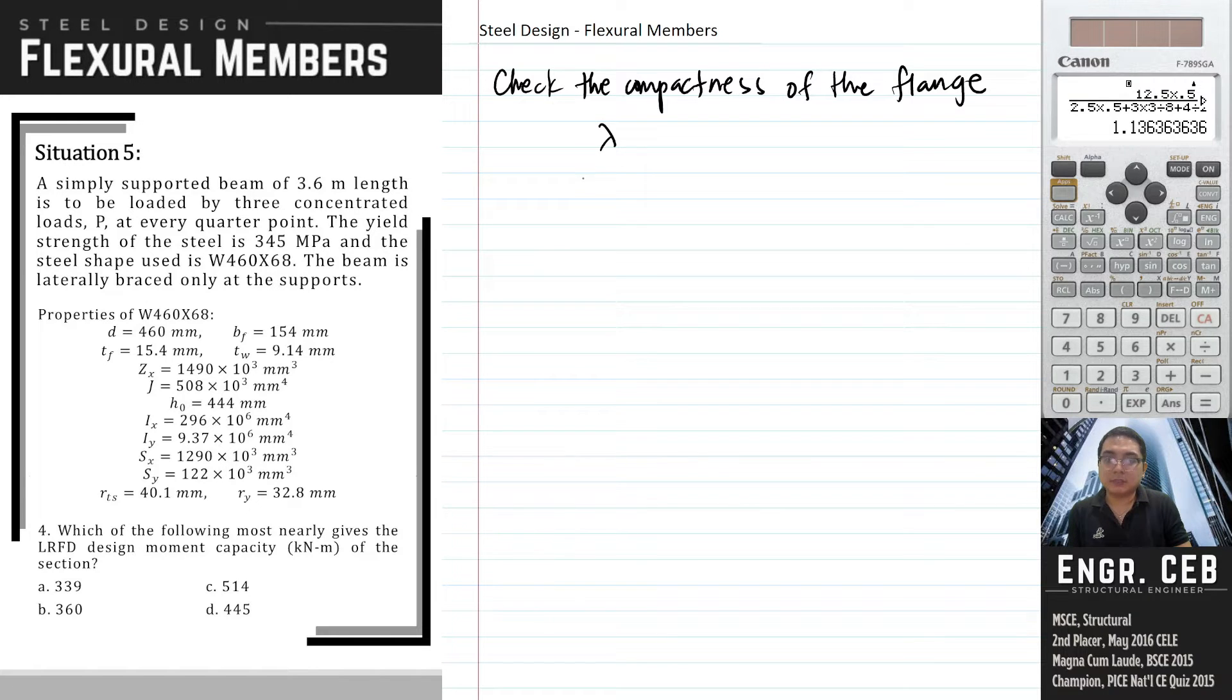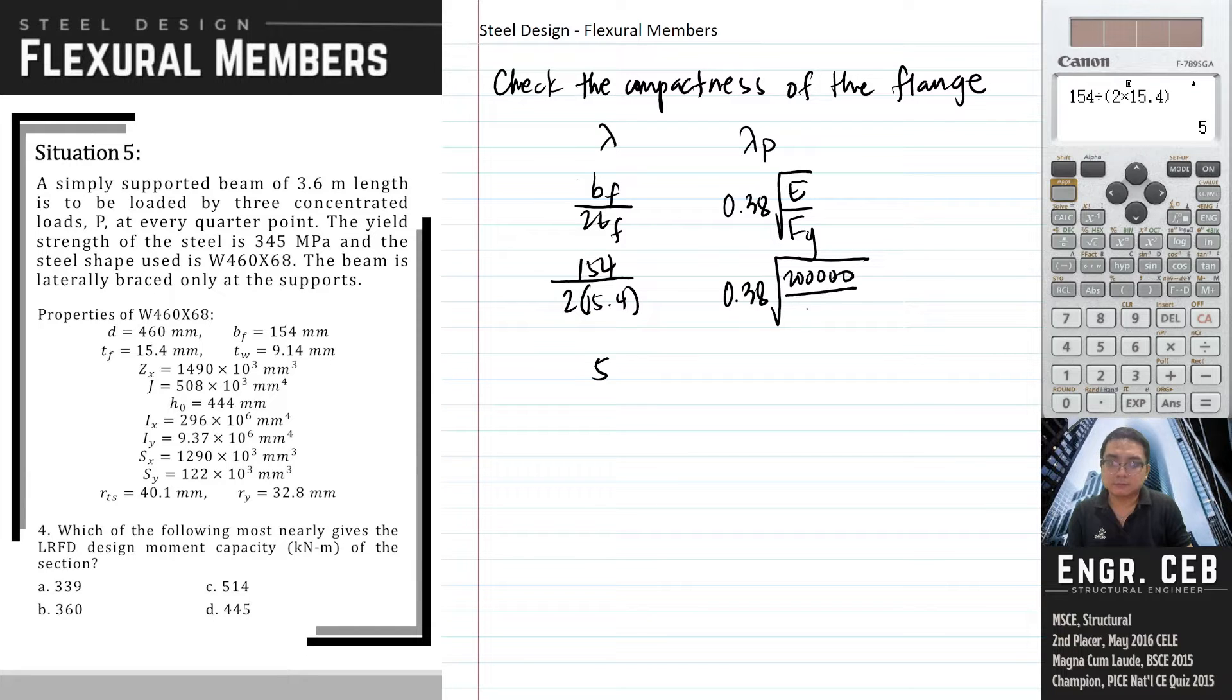For the compactness of the flange, that is bf over 2tf. Let us solve for that one. That is 154 over 2 times 15.4, we have 5. And then the lambda p is 0.38 square root of E over Fy. This is 9.493248. So as you can see, lambda is less than lambda p. Therefore, the flange is compact.